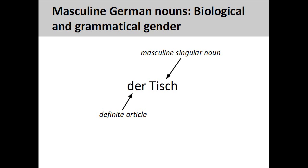The German noun 'Tisch' (table) has a masculine grammatical gender, so its definite article is 'der'. Here, the grammatical gender does not indicate any biological gender of the noun — there is nothing particularly male about a table. Although the grammatical gender of German nouns is sometimes difficult to determine, there are some rules that can help you. Let's take a look at them now.